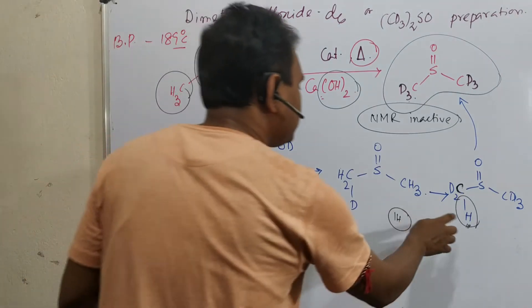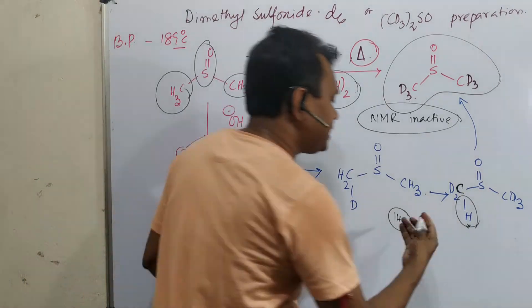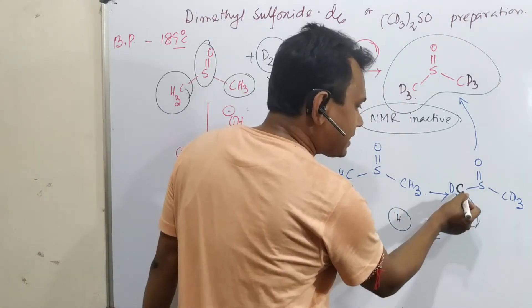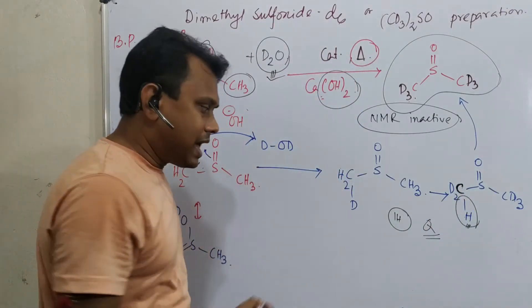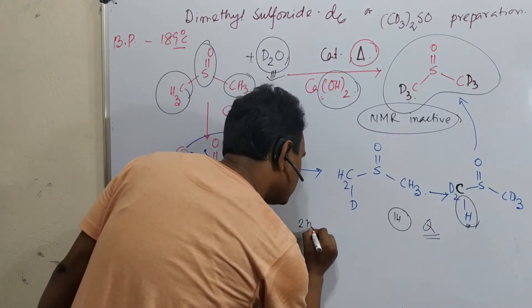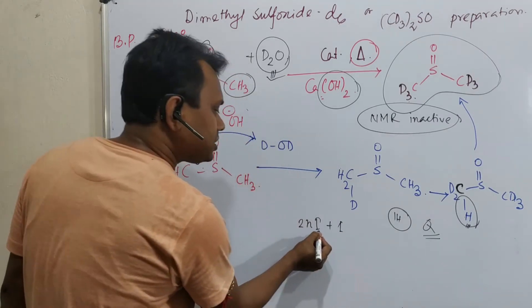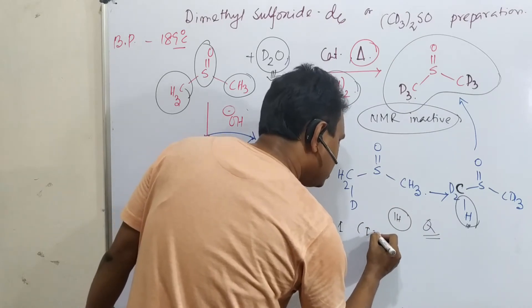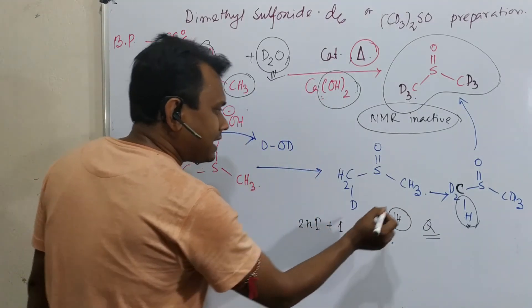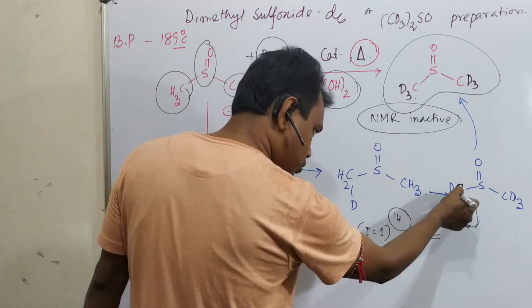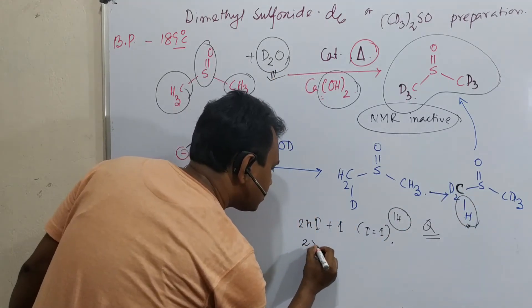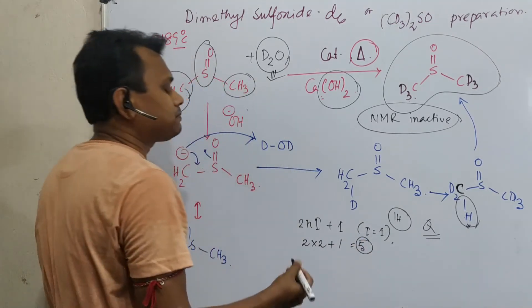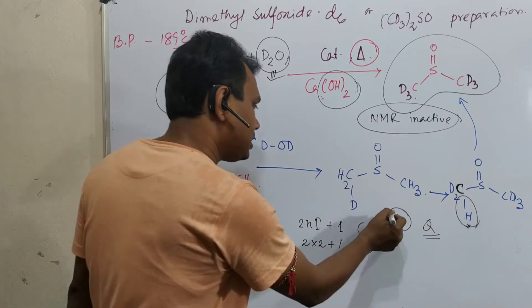If you look at the proton NMR, this is actually a pentet or quintet. Why 5? Because this proton is attached to the carbon which is attached to 2 deuteriums and we know the formula is 2nI plus 1, and for proton NMR, this deuterium I equal to 1. So in this case, 2 are there. So overall 2 into 2 plus 1 equal to 5. So that's why this is pentet or quintet. So this is for proton NMR.